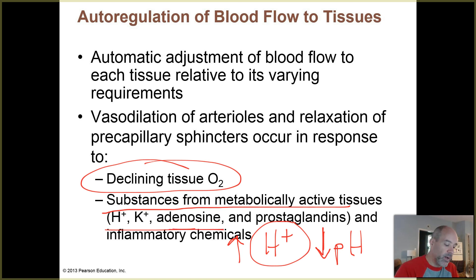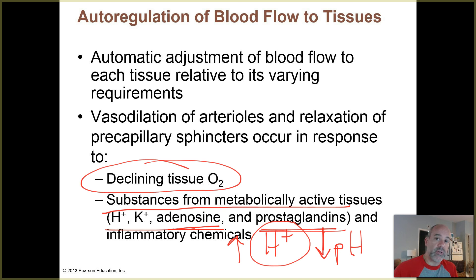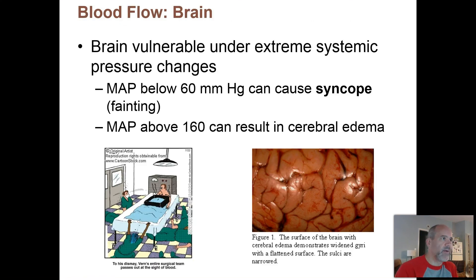There are also signaling molecules — adenosine and prostaglandins — released from metabolically active tissues or tissues experiencing injury or inflammation. Those types of things will also increase blood flow to an area to help with injury repair and fighting infections.